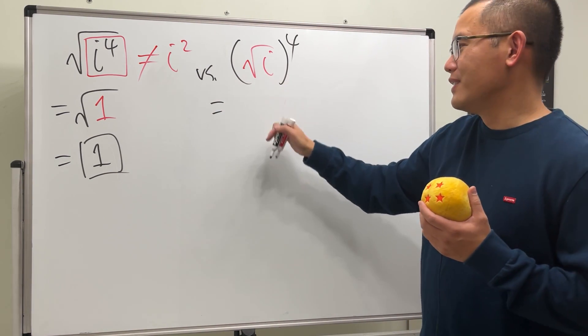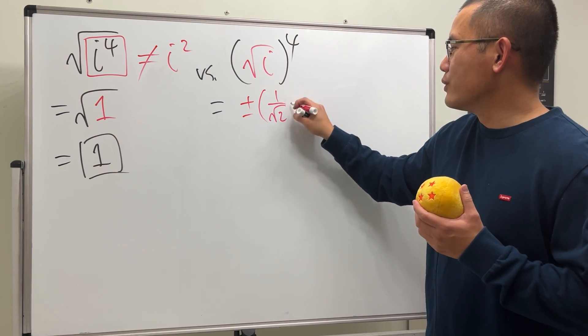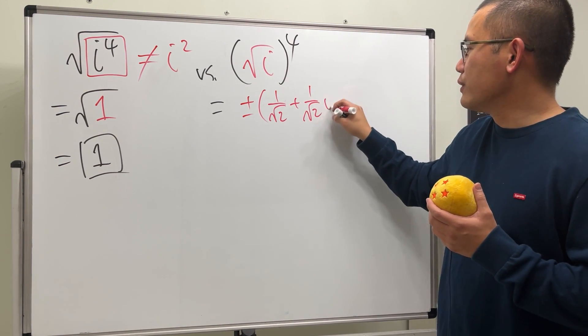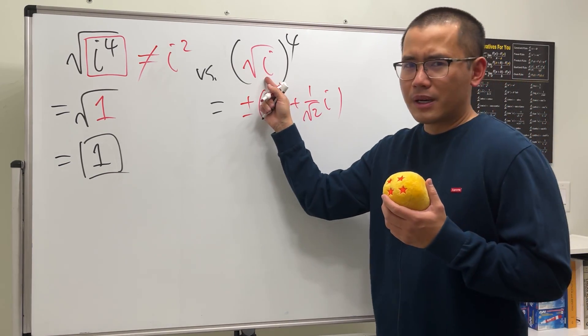Well, you can look at my other videos for this right here. You get plus or minus parentheses 1 over square root of 2 plus 1 over square root of 2i. So this right here is for the square root of i. We do have plus or minus because we are talking about complex values.